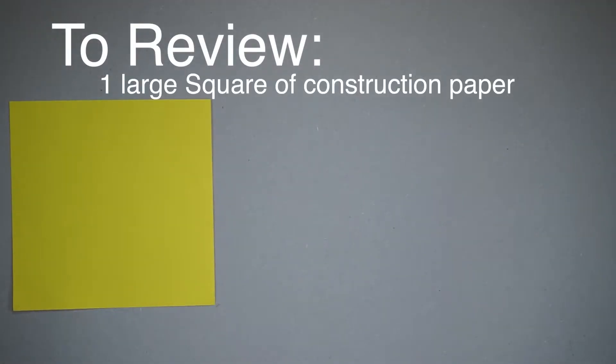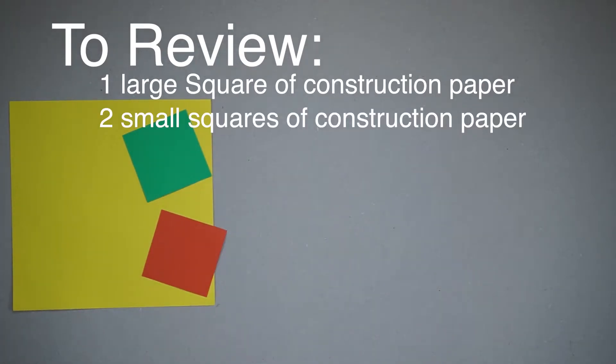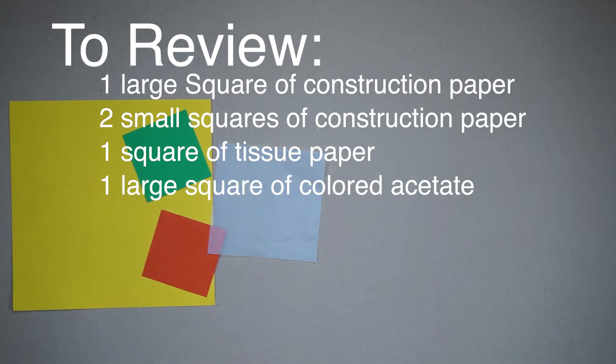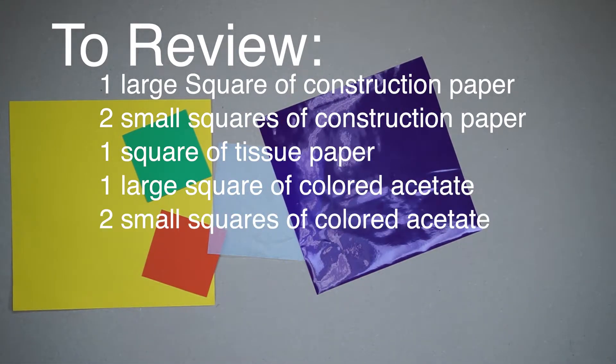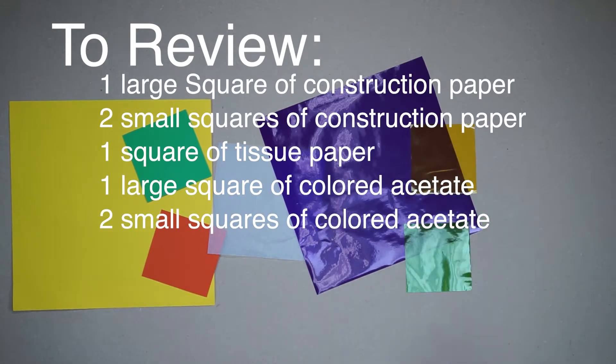One large square of construction paper, two small squares of construction paper, one square of tissue paper, one large square of colored acetate, two small squares of colored acetate, and finally a glue stick.